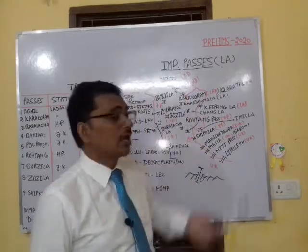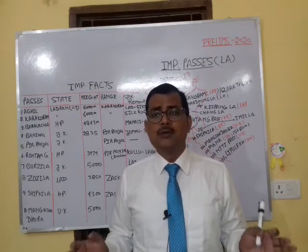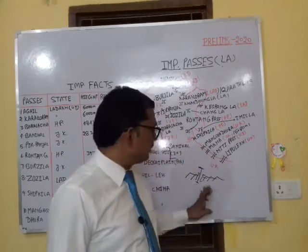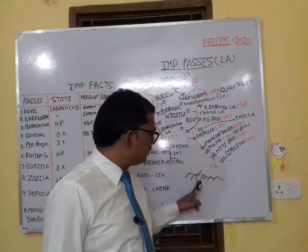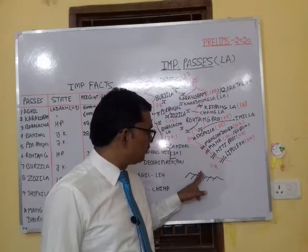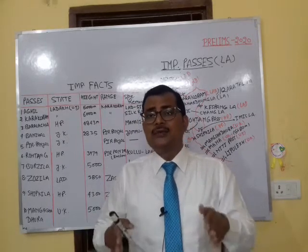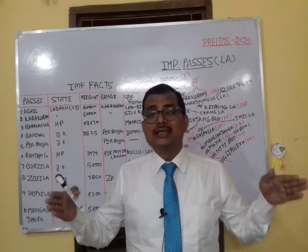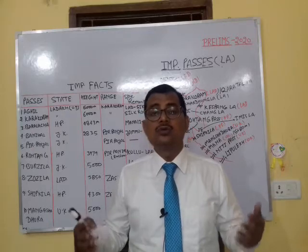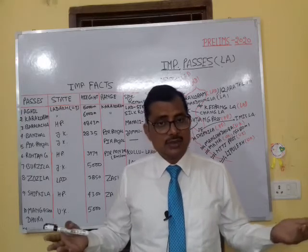The topic is passes. Passes are simply gaps between mountains or discontinued parts in the mountain region. Due to many kinds of tectonic processes, a part is not developed, not very elevated, so it has less height. That area where the mountain is discontinued is simply known as passes or gaps. In Hindi, it is also known as dhara. So you can say passes, gaps, or dhara — these three words are very useful.